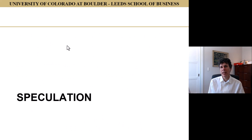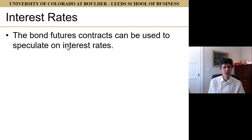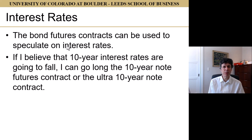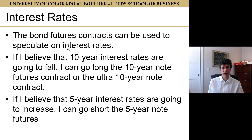Let's talk about a couple of use cases. One is speculation. The bond futures contract can be used to speculate on interest rates. If I believe that 10-year interest rates are going to fall, I can go long the 10-year note futures or the ultra-10-year note futures — my belief that 10-year rates will fall means that 10-year bond prices should go up. If I believe that 5-year interest rates are going to increase, then I can go short the 5-year note futures. A question that should immediately come to mind is: why use bond futures rather than the bonds themselves? You could go long or short bonds directly.